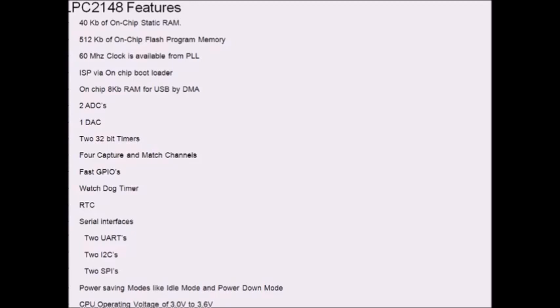Coming to the GPIOs, they are divided into 2 blocks — fast GPIOs as well as slow GPIOs. And it is going to contain 1 fast GPIO block.